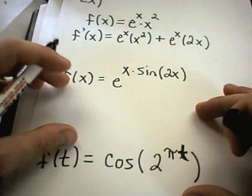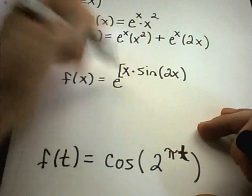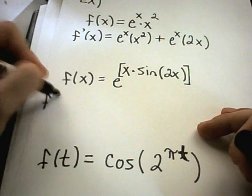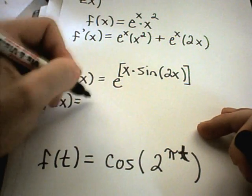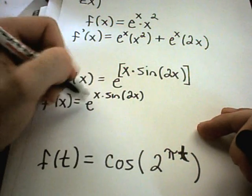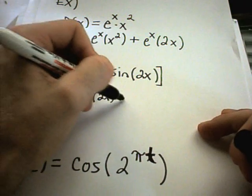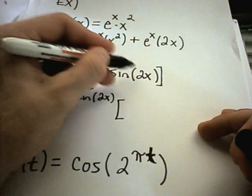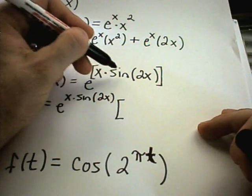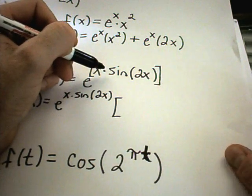So, in our next example here, we have e raised to some more complicated looking stuff. Well, the derivative formula says you get e raised to all of this stuff right back. So you'll get e raised to the x times sine of 2x. But now we have to multiply by the derivative of the stuff, basically, of the exponent. So I have x times sine of 2x. I'm going to have to use the product rule and the chain rule when I take the derivative on this piece.